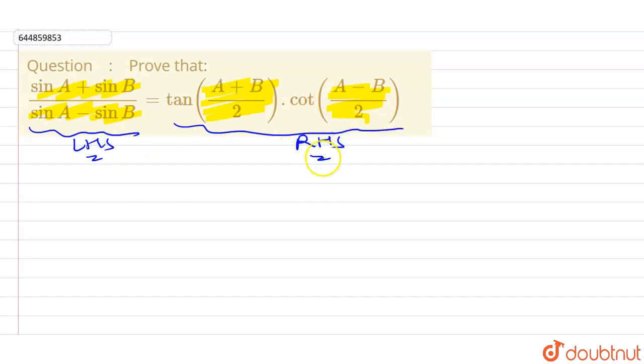So this is our LHS and this is our RHS and we have to prove LHS equals to RHS. Let's take first LHS.